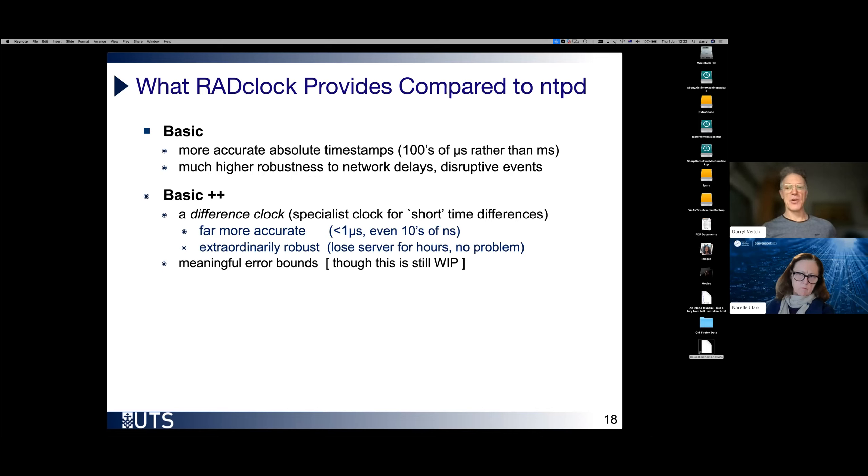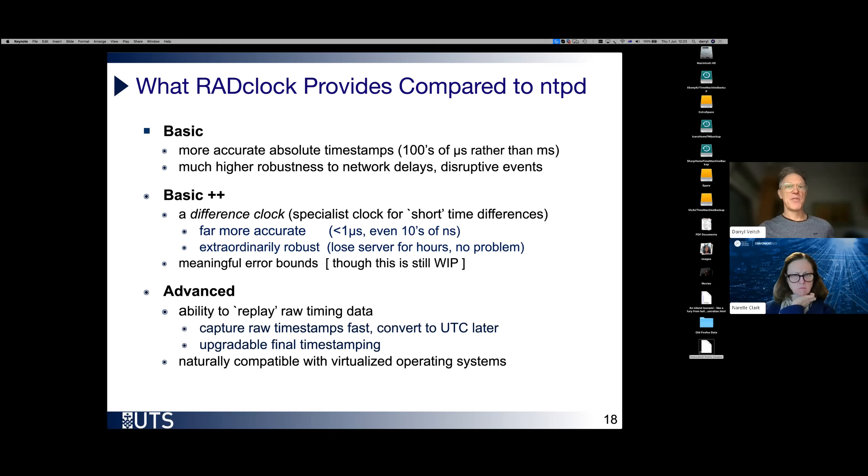Beyond that, we have a difference clock, which under the existing NTPD paradigm does not exist at all. In the existing paradigm, you have access only to an absolute clock, which means it's the only one you've got. So if you want to measure a time difference in particular, that's what you're going to have to use. And then that will then inherit all the issues with an absolute time clock. Because we have a difference clock, we can measure round trip time intervals without a problem to sub microsecond, without the need for GPS.